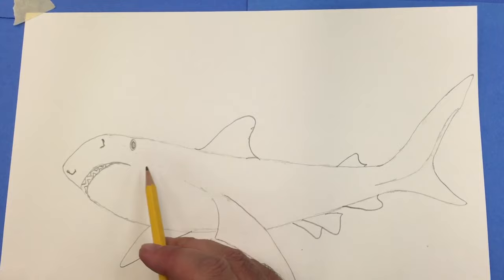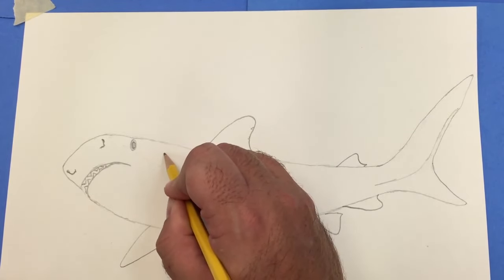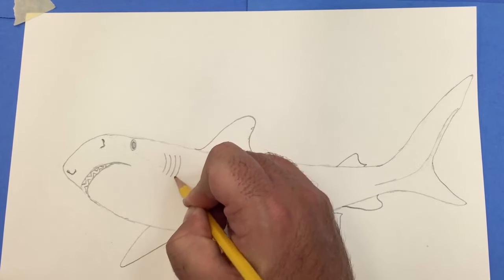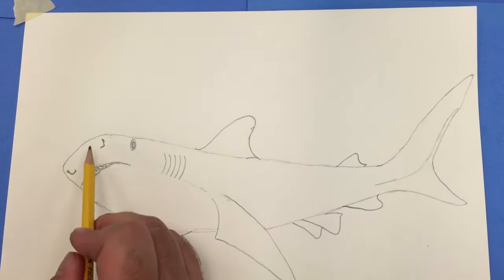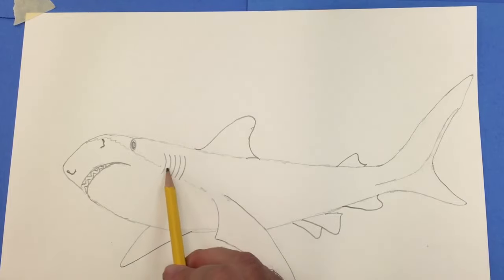And now between the mouth and the pectoral fin, I'm going to add five gills. And after that, I'm going to draw this line that separates the white underbelly from the grayish or brownish pattern on the side and back of the shark. And so that is our basic sketch of the tiger shark.